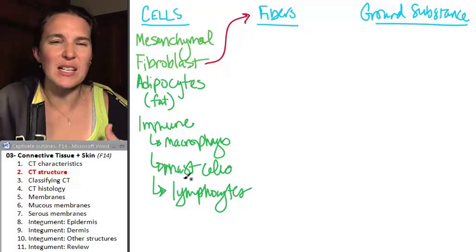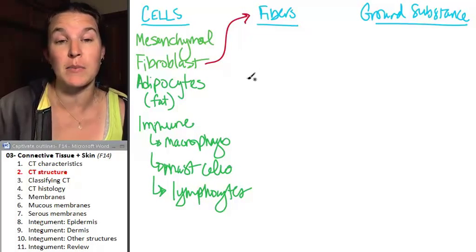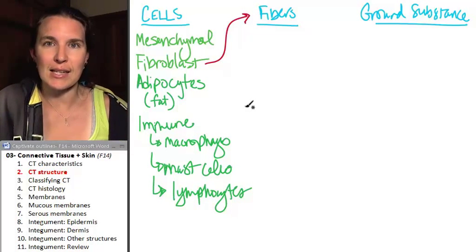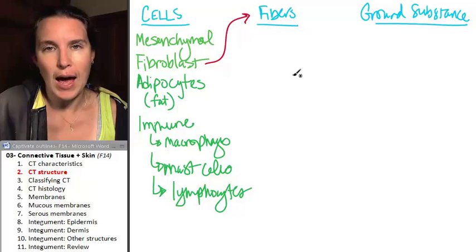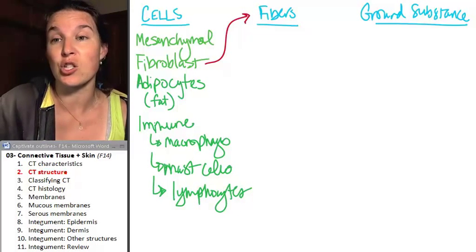Okay. So basically a whole bunch of immune cells that come in and are patrolling the area to make sure that everything is cool. Is this it? Is that the only kind of cells that you're going to find? Absolutely not. And when we look at specific kinds of connective tissue, we will look at other possibilities as well.